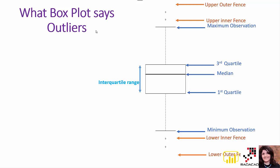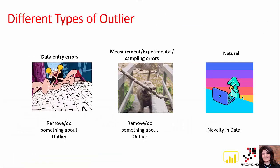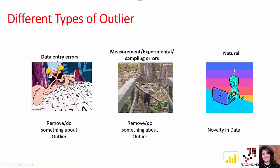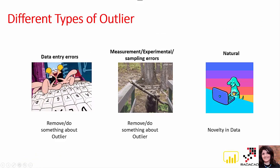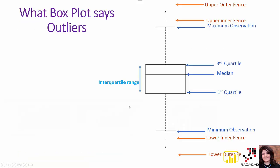In some scenarios we decide to remove outliers. We may be interested in removing them if they come from data entry errors, measurement or experimental errors, or if they describe a separate and different scenario in the data. We should first detect them, then decide whether to remove them or do something else about them.